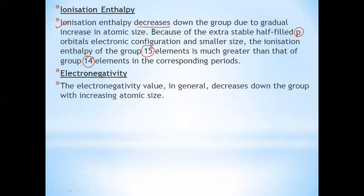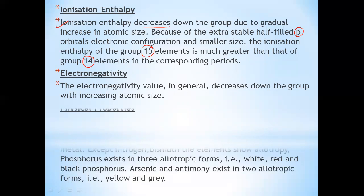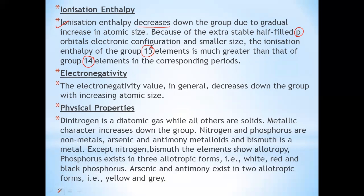Nitrogen, atomic number 7, has electronic configuration 1s2, 2s2, 2p3. Arsenic (AS), atomic number 33, has 4s2, 4p3 as the valence shell. Antimony (SB), atomic number 51, has 5s2, 5p3. Bismuth, atomic number 83, has 6s2, 6p3. So in common form, the valence shell configuration for all is ns2, np3.